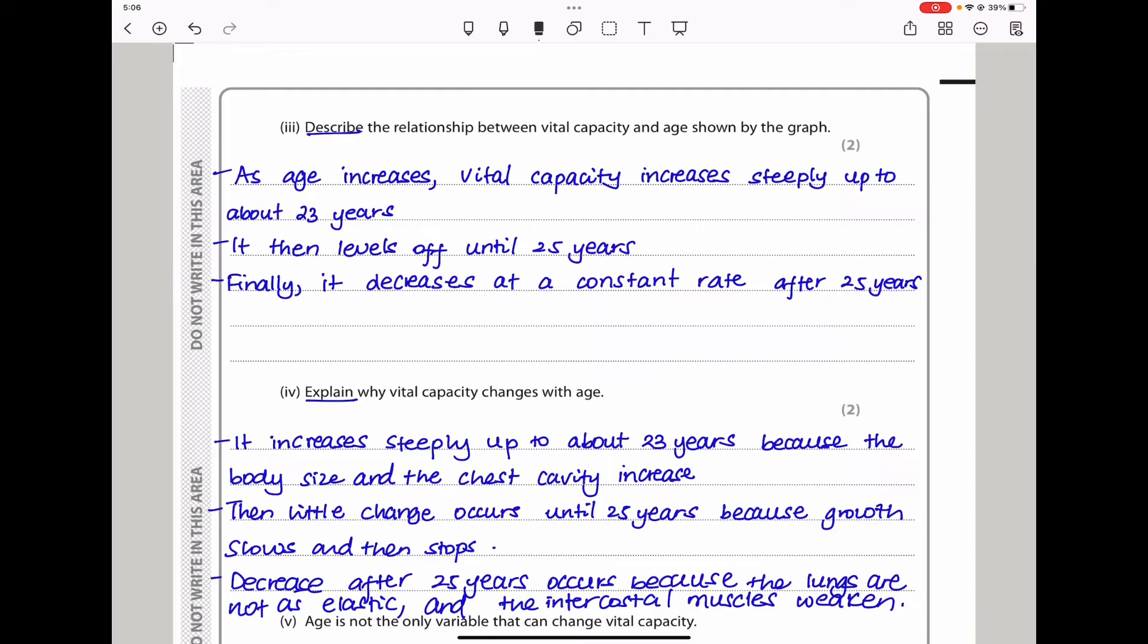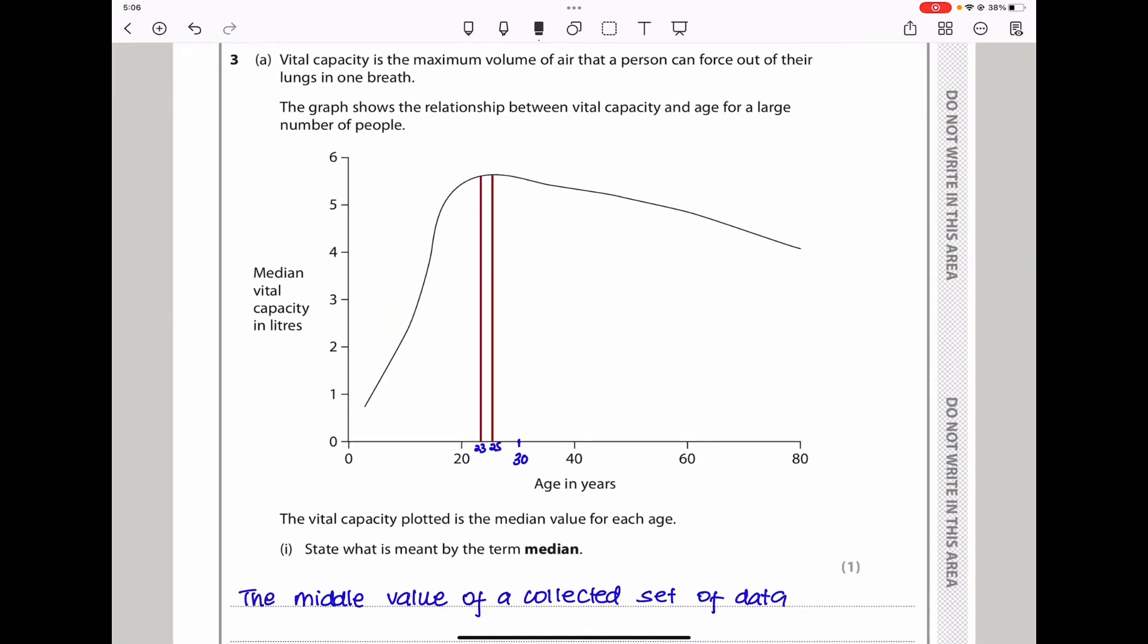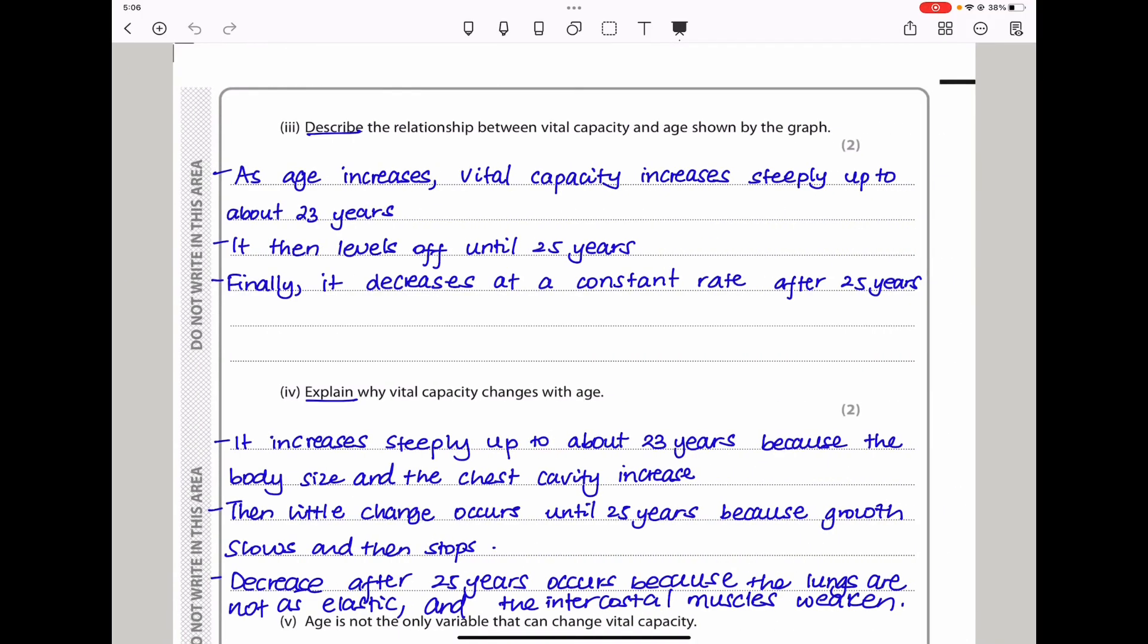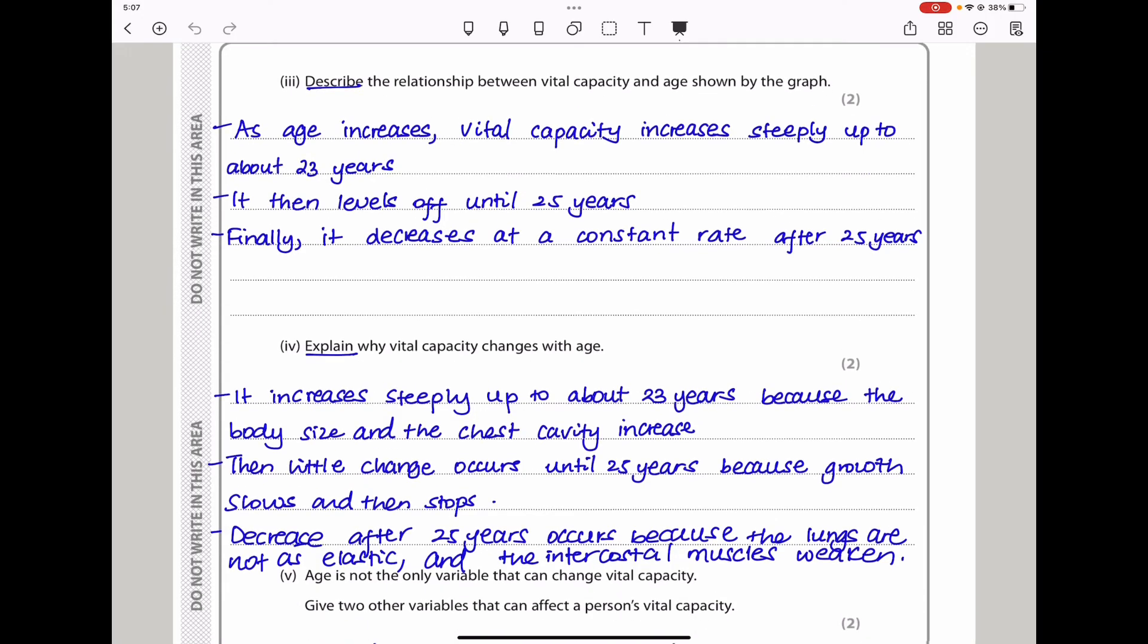Describe the relationship between vital capacity and age shown by the graph. From the graph, we can see that as age increases vital capacity increases steeply, initially, up to about 23 years of age. Vital capacity steeply increases to about 23 years of age. Then it becomes somehow constant before it begins to decrease. It then levels off until 25 years, and finally, it decreases at a constant rate after 25 years.